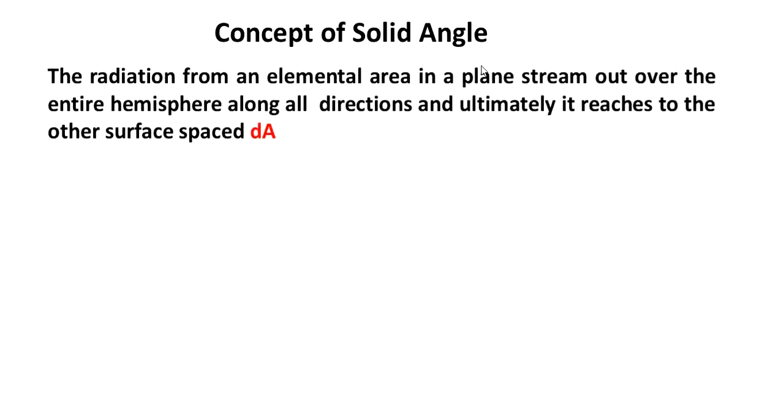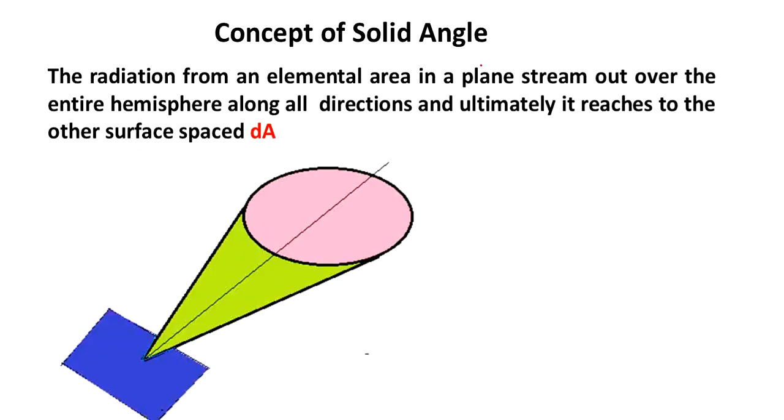The concept of solid angle: radiation from an elemental area in a plane streams out over the entire hemisphere along the direction, ultimately reaching the other surface spaced at distance r.